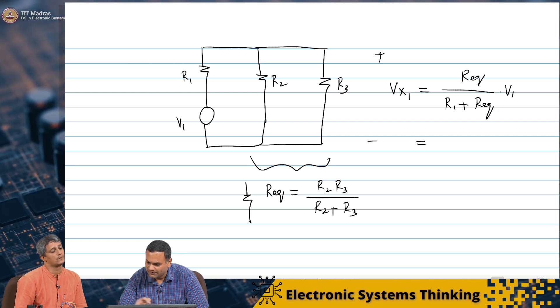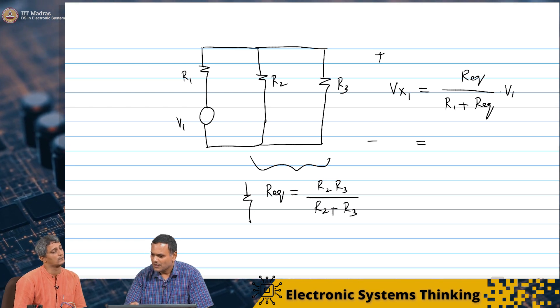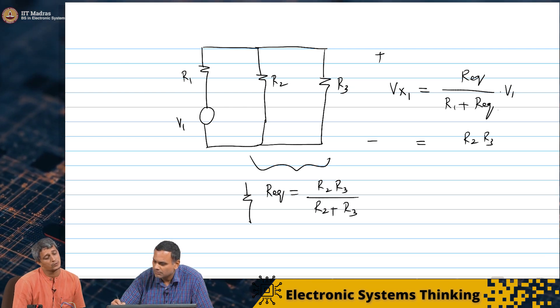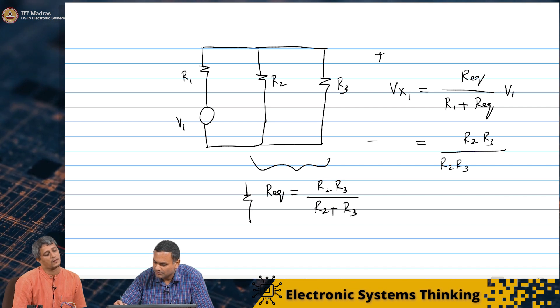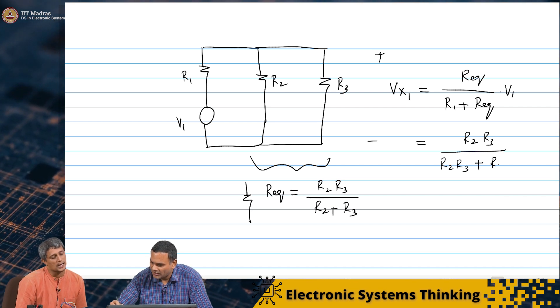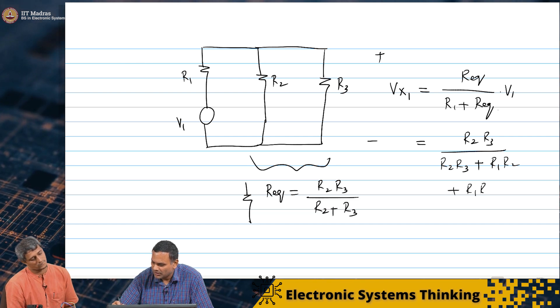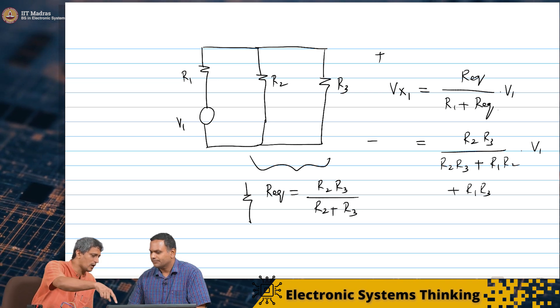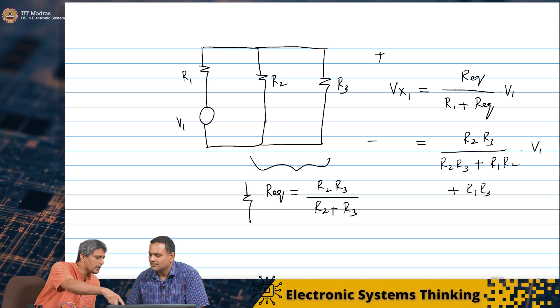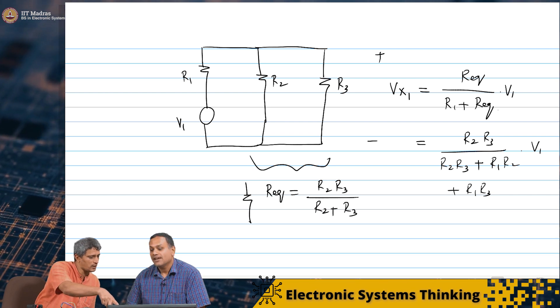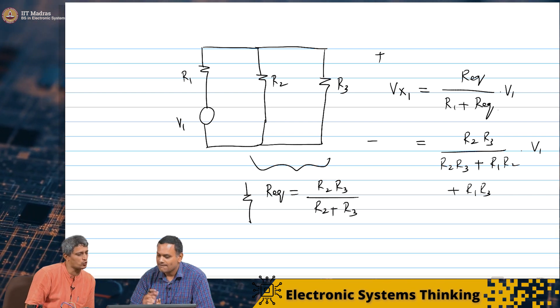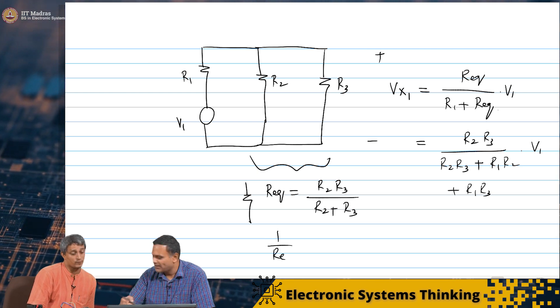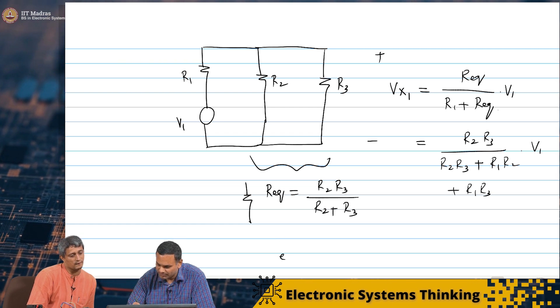And in fact, if we want to write it in terms of this, this will simply be R2 R3 by R2 R3 plus R1 R2 plus R1 R3. I'm just writing out R equivalent. I think if you want to relate it to the mixer expression we derived, why don't we deal with 1 by R equivalent in this. Sure. It might be a little easier for us to do that.